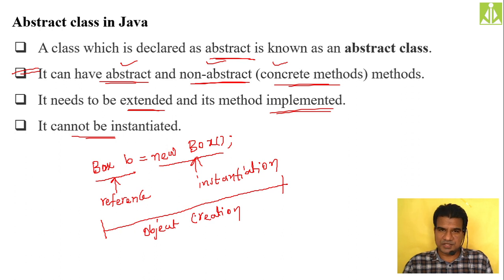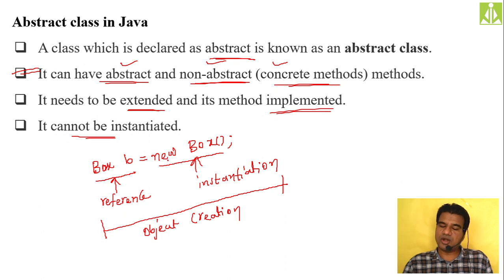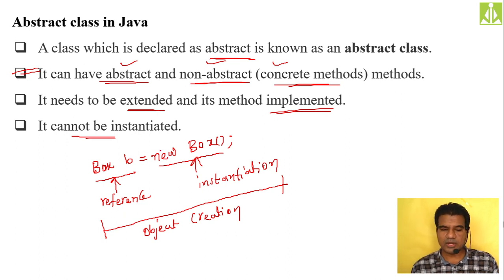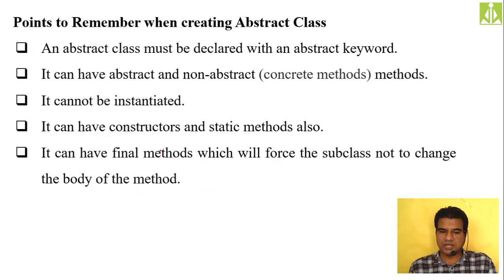You cannot instantiate an abstract class — meaning you cannot use the new keyword or call the constructor of the abstract class. Points to remember when creating an abstract class: it must be declared with the abstract keyword, it can have both abstract and non-abstract methods, and it cannot be instantiated.